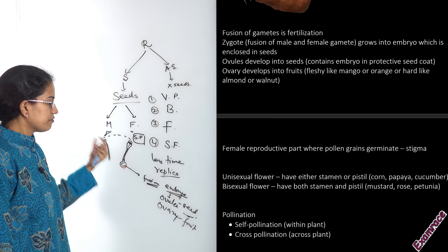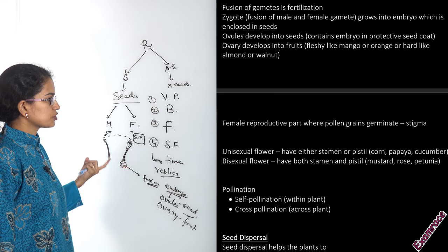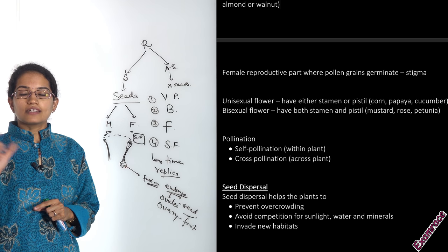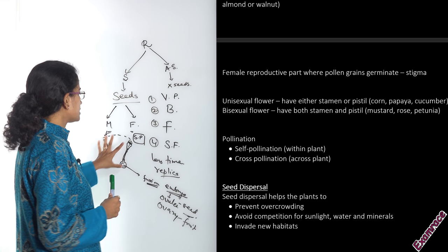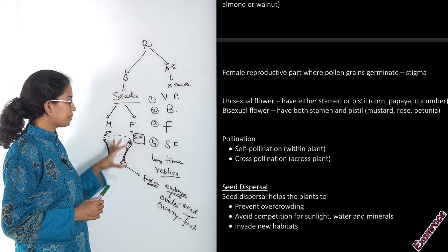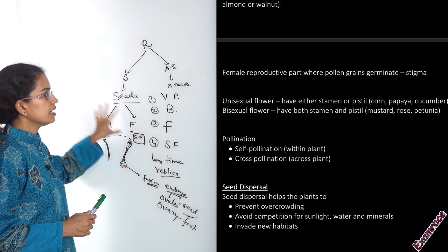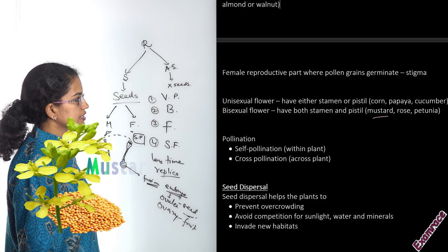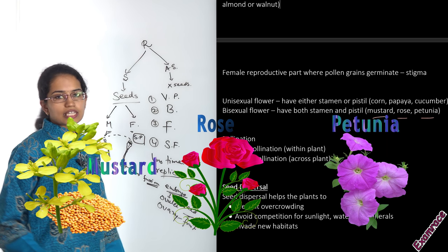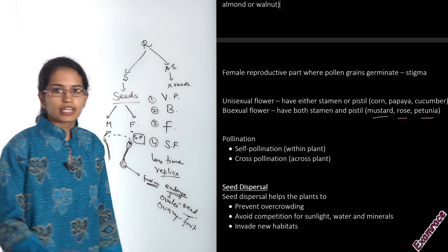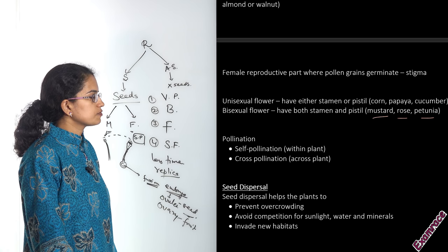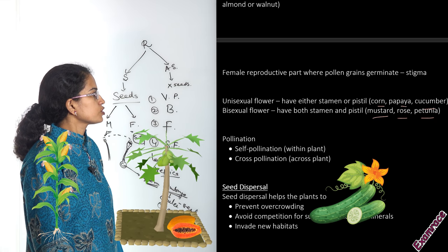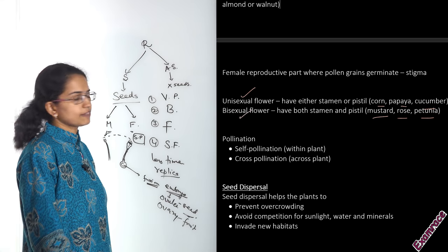Flowers can be unisexual or bisexual. Bisexual flowers have both male and female reproductive parts on the same flower — common examples are mustard, rose, and petunia. These are commonly asked in MCQ questions, so you must remember them. Plants that have separate male and female reproductive organs include corn, papaya, and cucumber — these are examples of unisexual flowers.